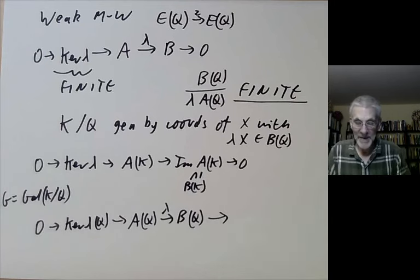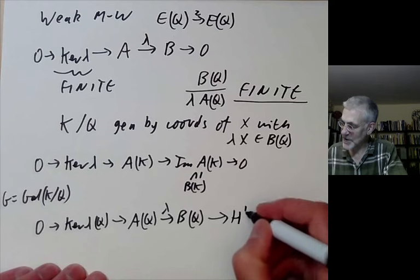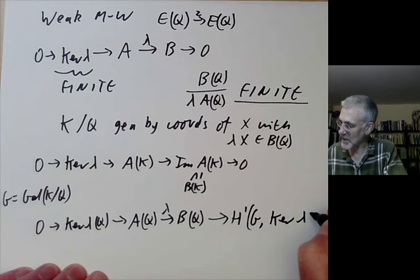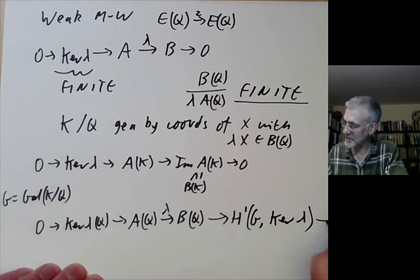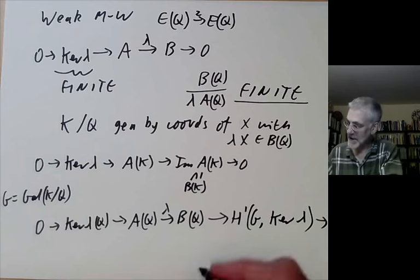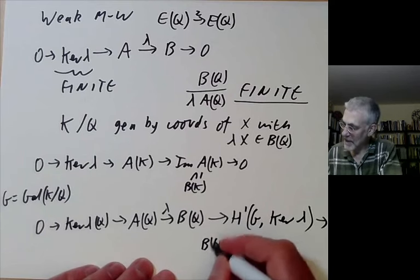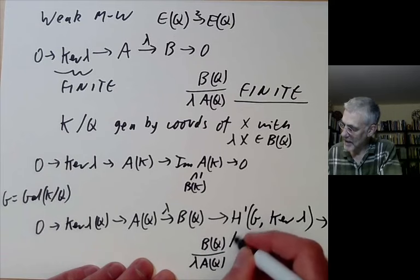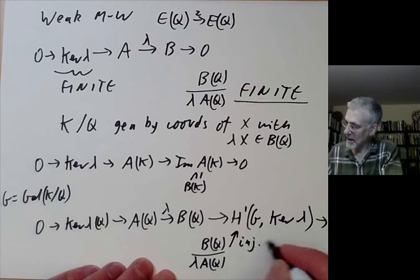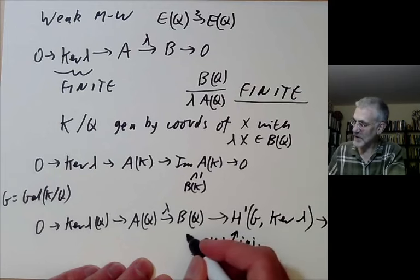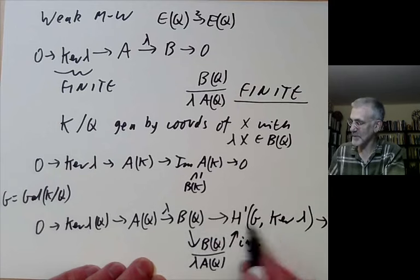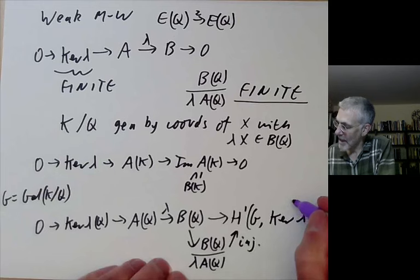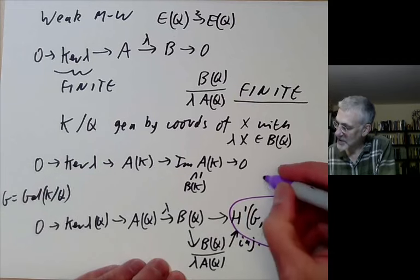Instead, this maps to a certain cohomology group, which is H^1 of G, with values in kernel lambda, which we won't worry about too much. But what we notice is that B(Q) over lambda A(Q) is a subgroup of this group here. So what we want to do is to show that this group is finite.